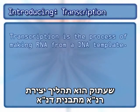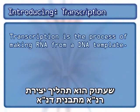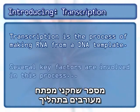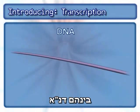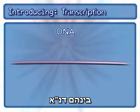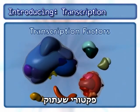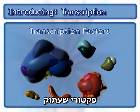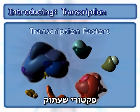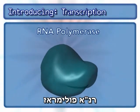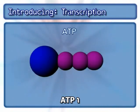Transcription is the process of making RNA from a DNA template. Several key factors are involved in this process, including DNA, transcription factors, RNA polymerase, and ATP.